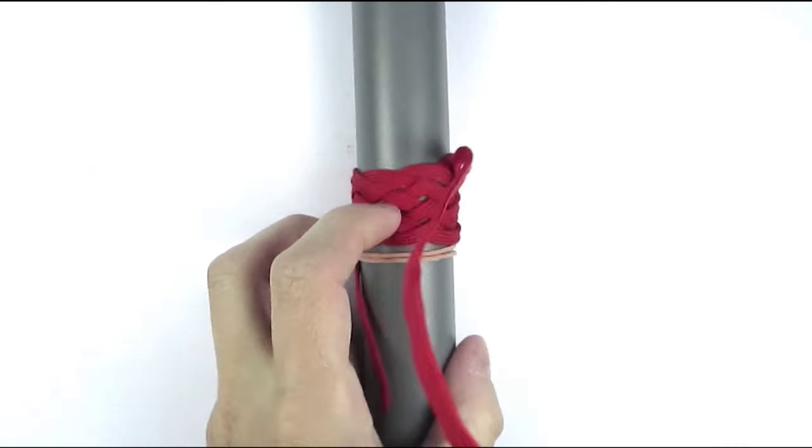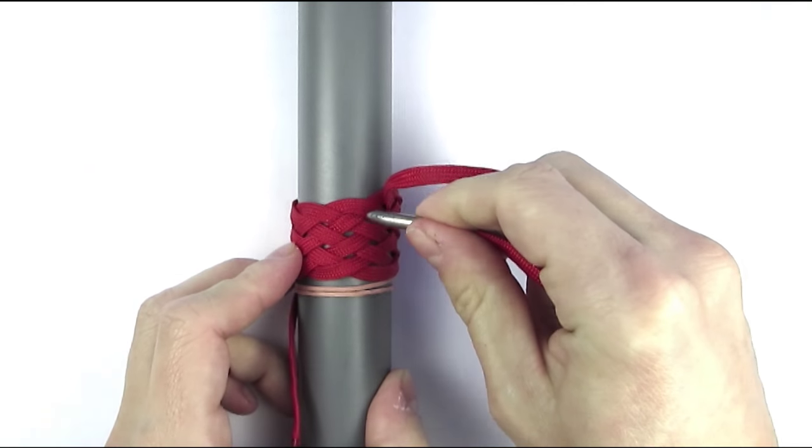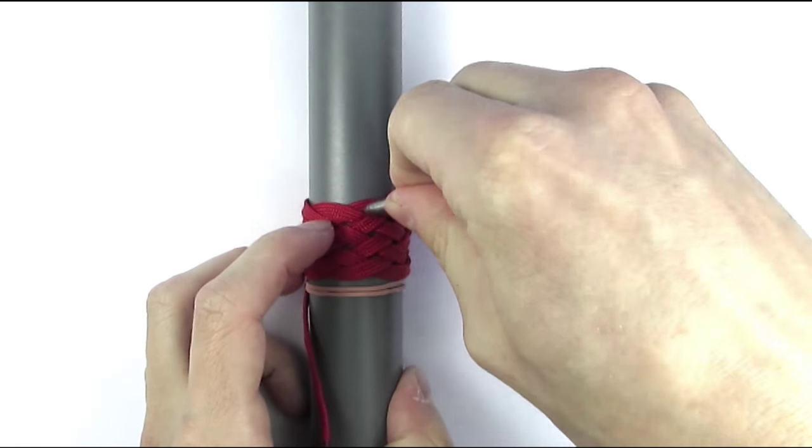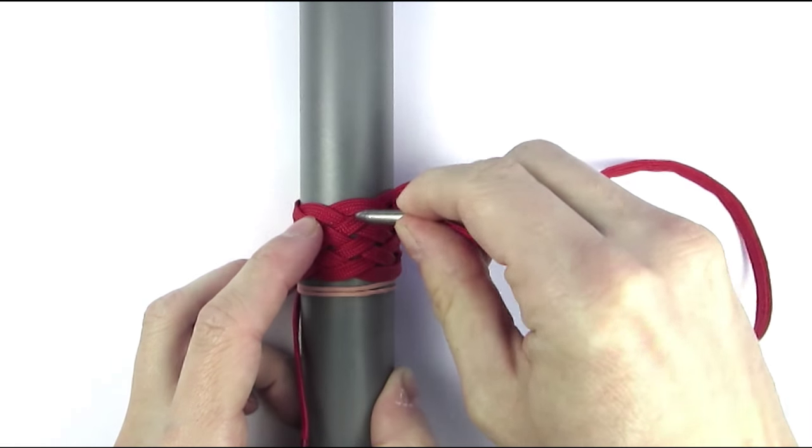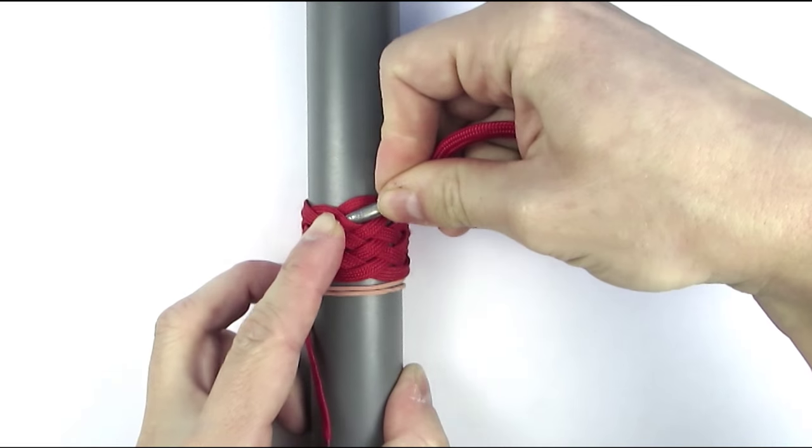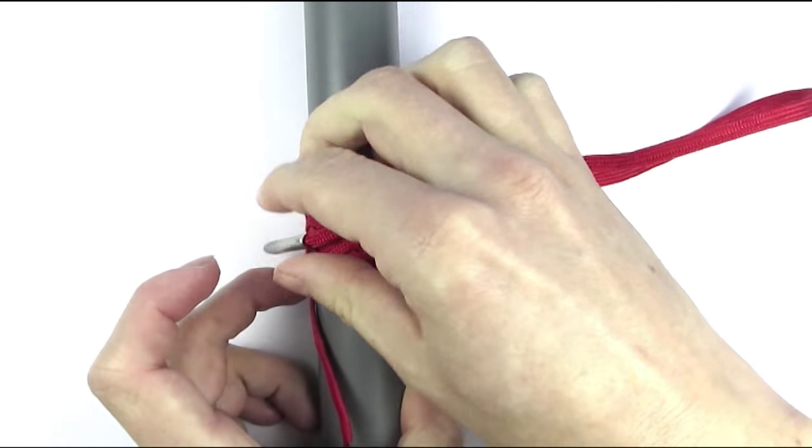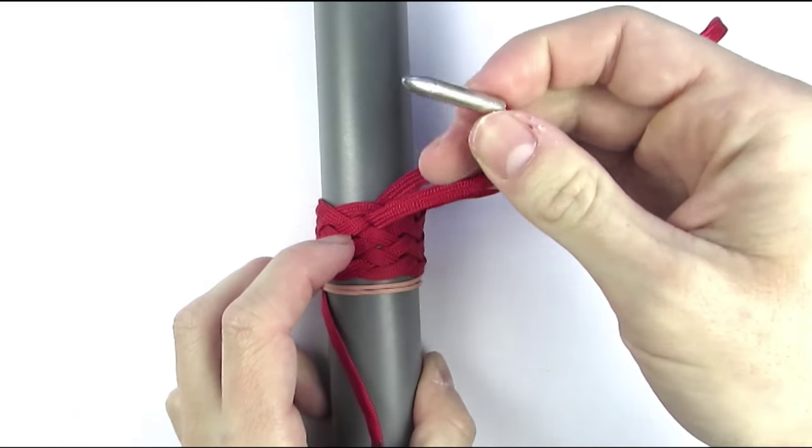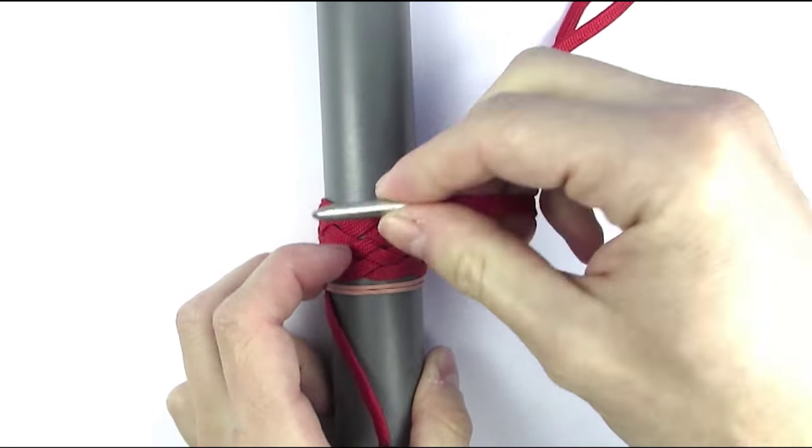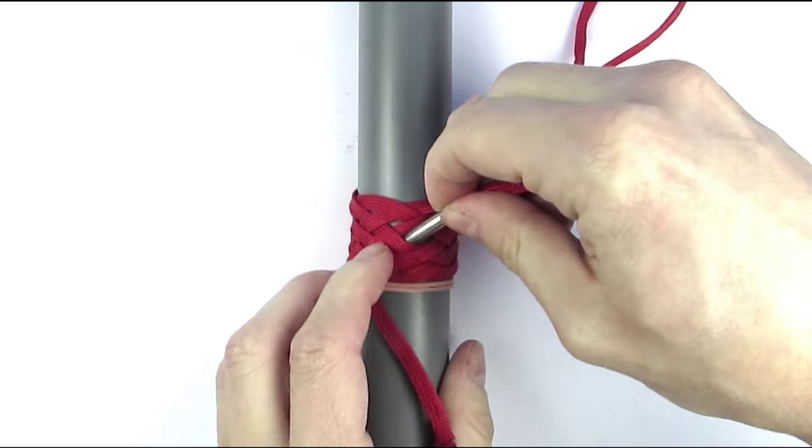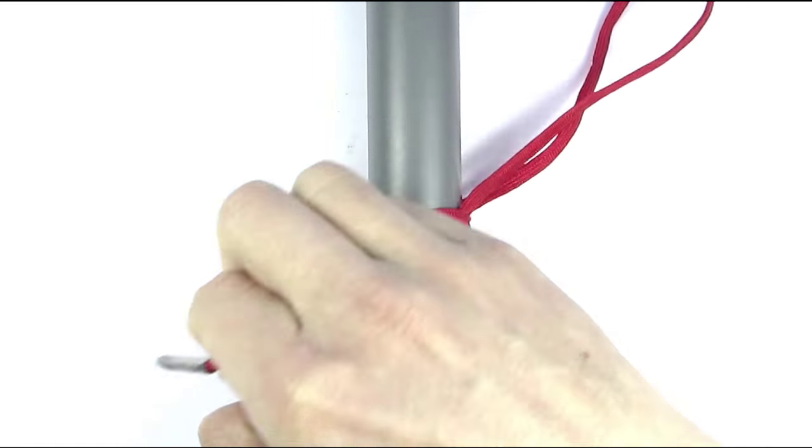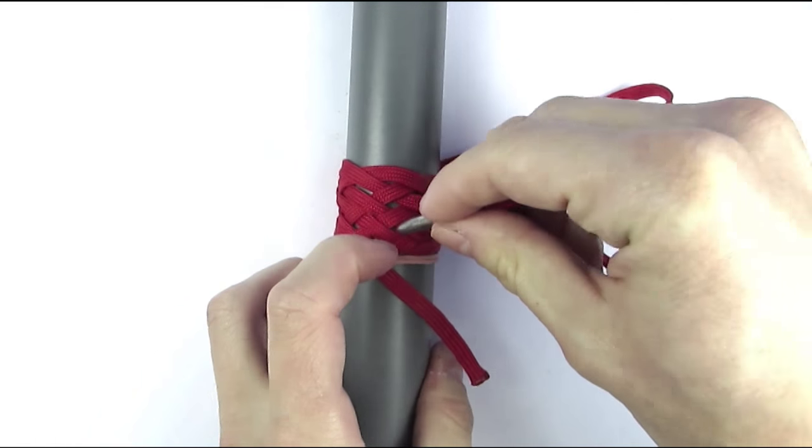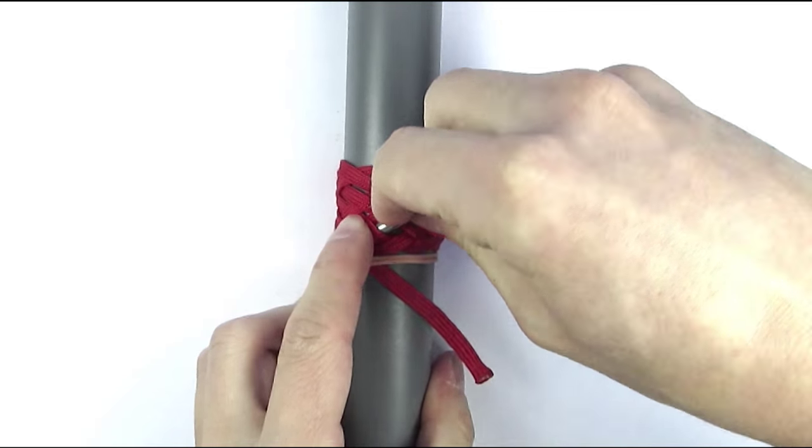We're going to enter into the bight to our left, going the opposite of the previous cord. So, since the previous one went under, we're going to go over, then under, over, under, over, under and over.